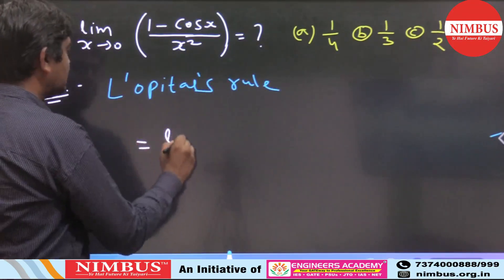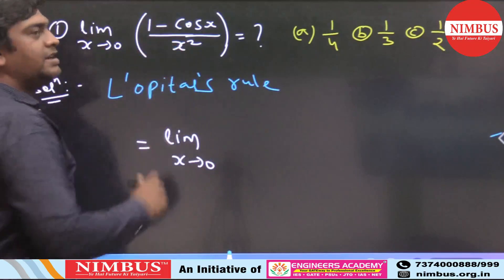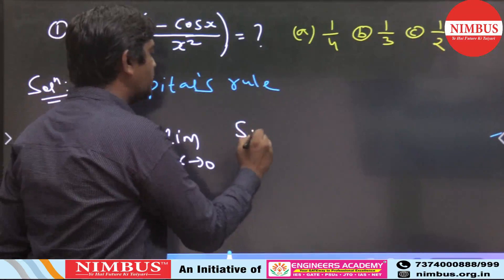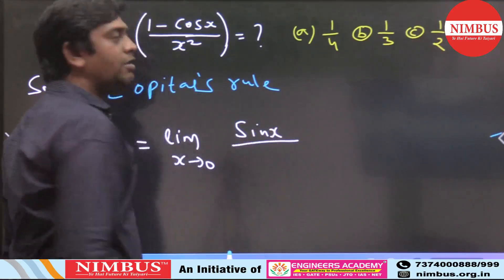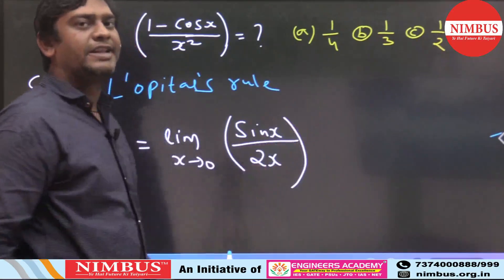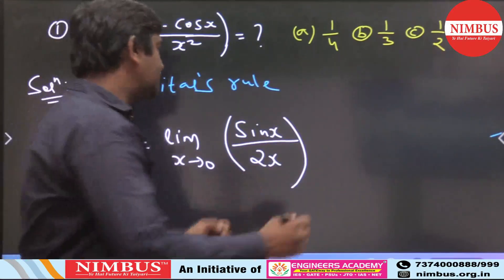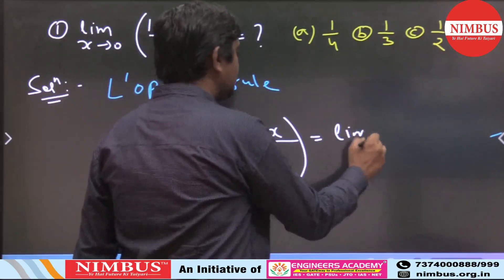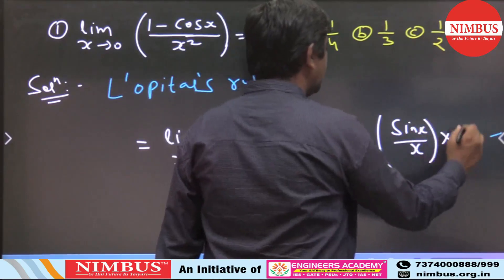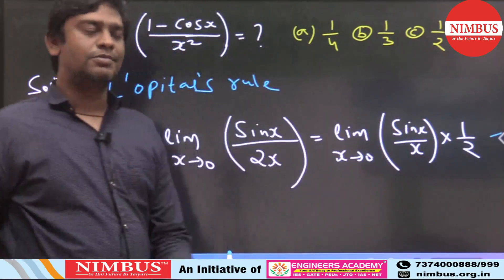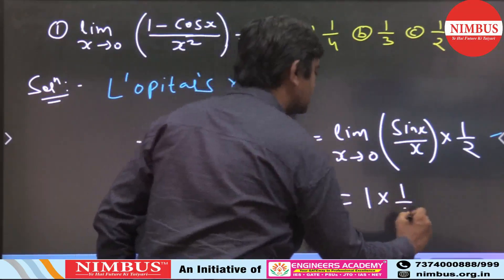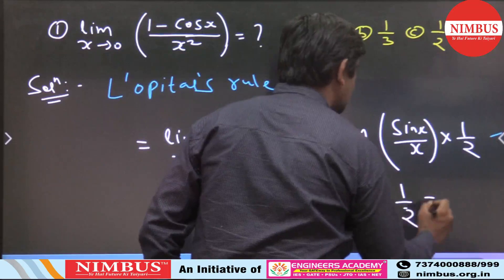What does it equal to — limit x tends to 0? Derivative of 1 is 0 and derivative of cos x is minus sin x. The derivative of the numerator is that of sin x. The derivative of the denominator is 2x. So if we apply L'Hospital's rule again, the answer is 1/2.